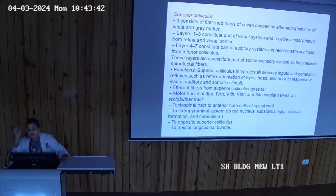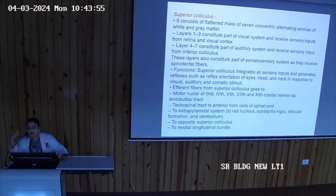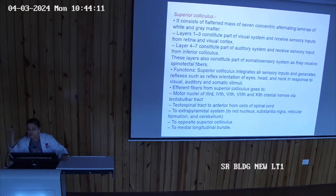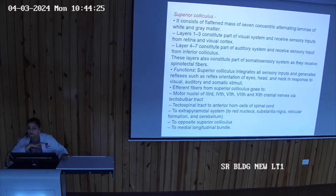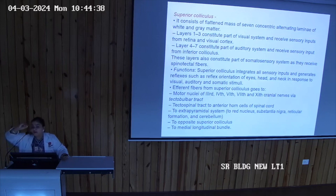Efferent fibers from the superior colliculus go to motor nuclei of the 3rd, 4th, 6th, 7th, and 11th cranial nerves via the tectobulbar tract, and to anterior horn cells of the spinal cord via the tectospinal tract. The extrapyramidal system includes the red nucleus, substantia nigra, reticular formation, and cerebellum. Fibers also go to the opposite superior colliculus and to the medial longitudinal bundle.